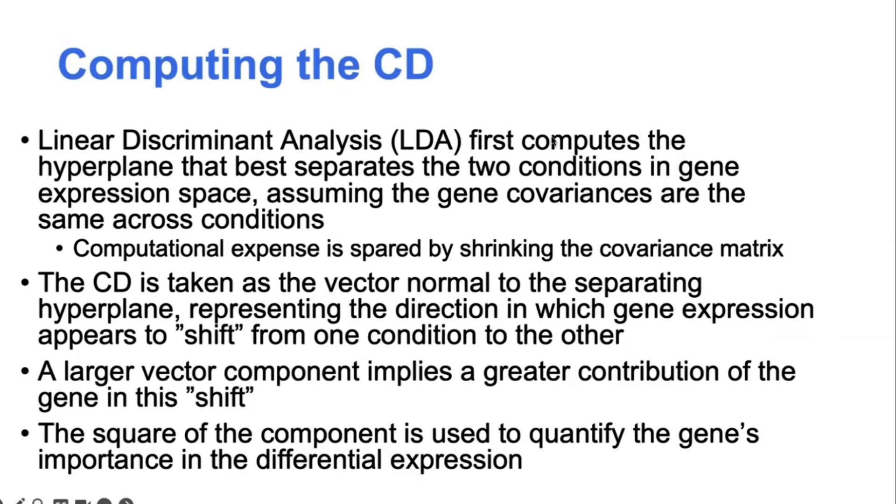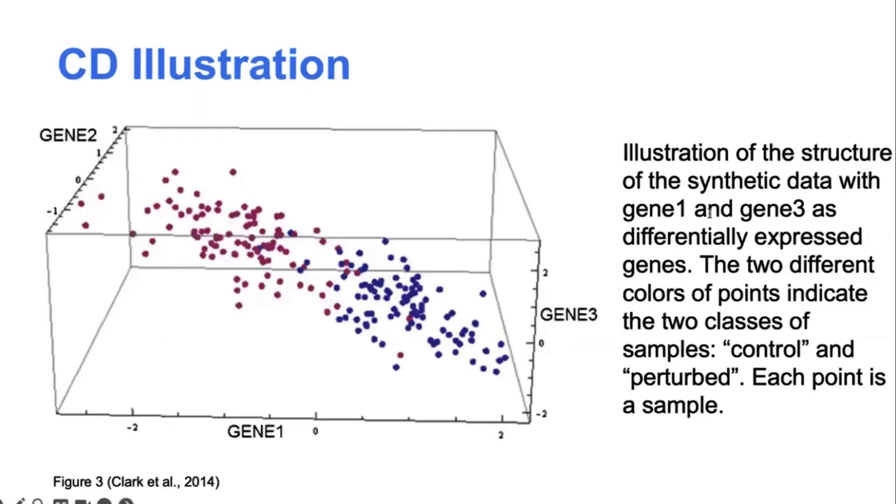So just to illustrate that in another example, so imagine now we have a three-dimensional gene expression space, and this is some synthetic data here where genes one and three are differentially expressed across these blue and purple control and perturbed conditions, but gene two is not differentially expressed.